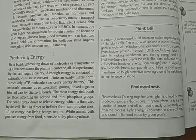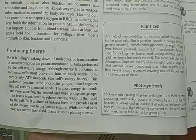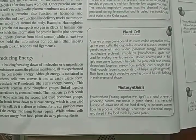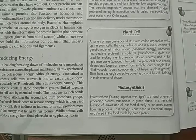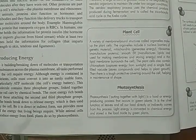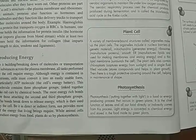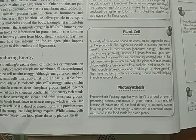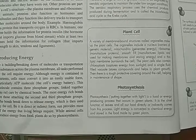Next is producing energy. Whether it is building or breaking down molecules, or transportation of substances across membranes, all tasks performed by the cell require energy. Every process requires energy. In living organisms, although energy is contained in nutrients, cells must convert it into an easily usable form. That usable form is ATP, which acts as the cell's energy battery.